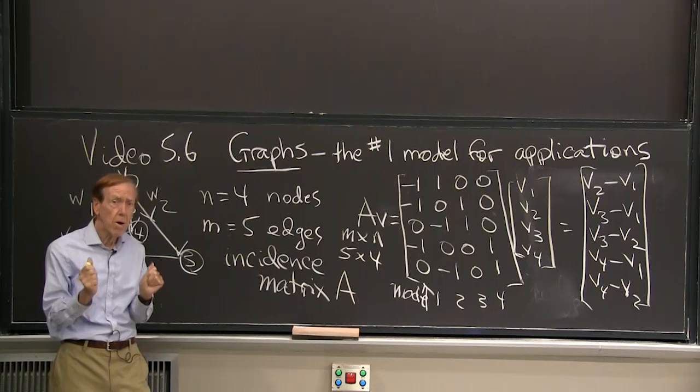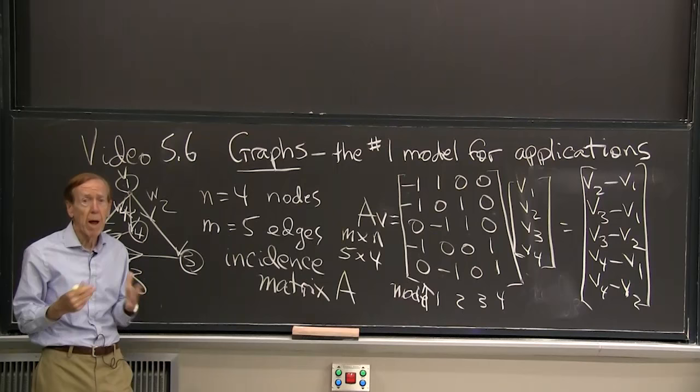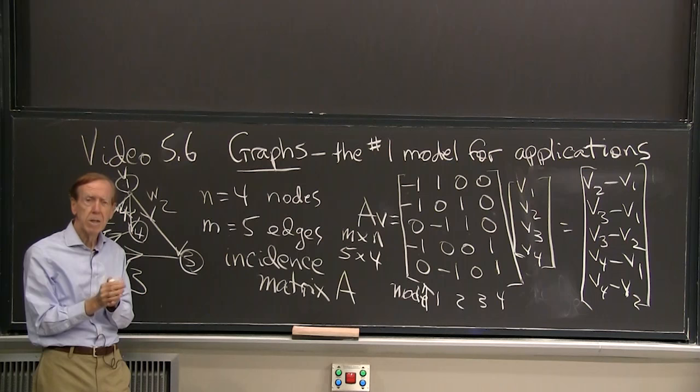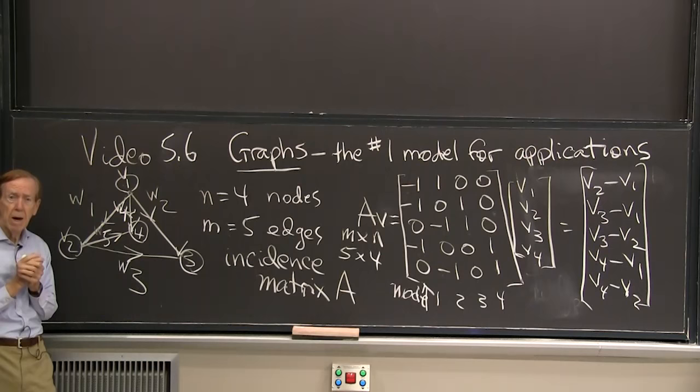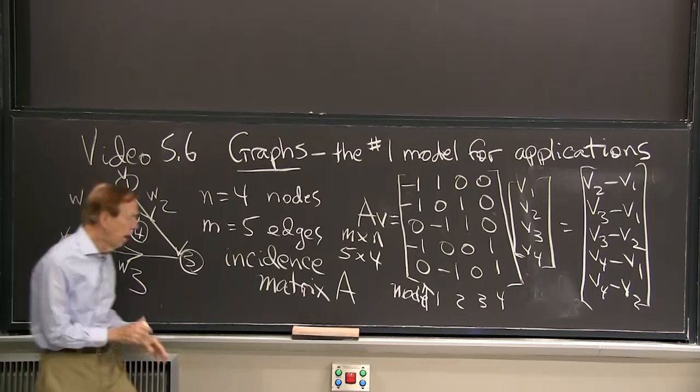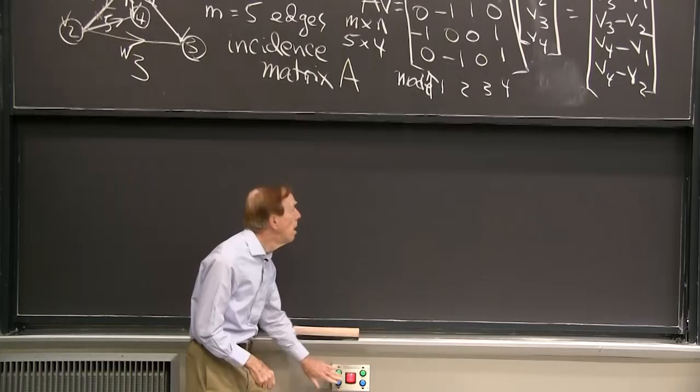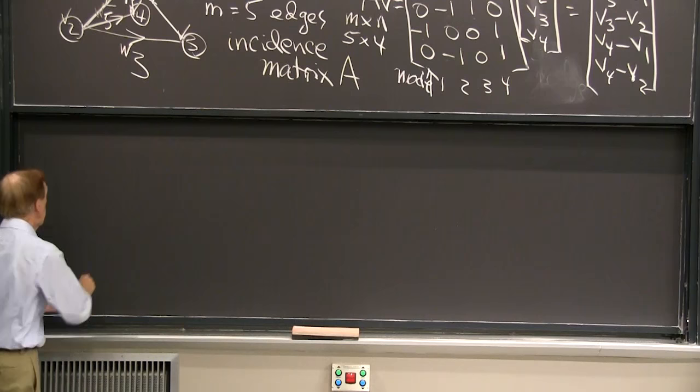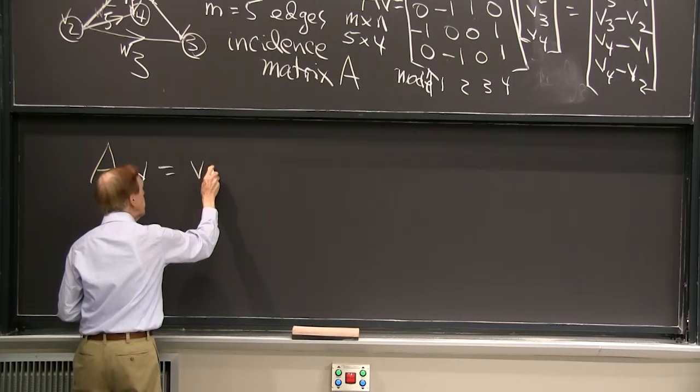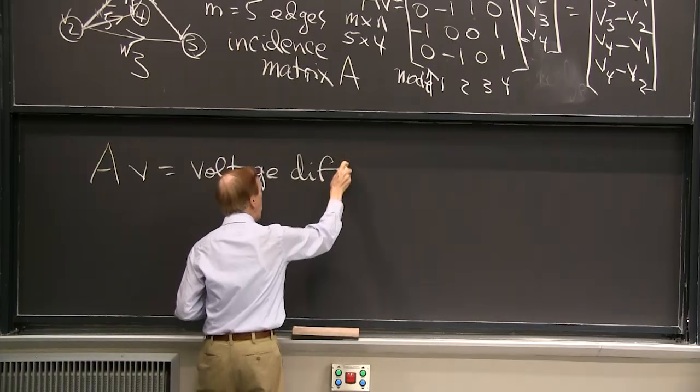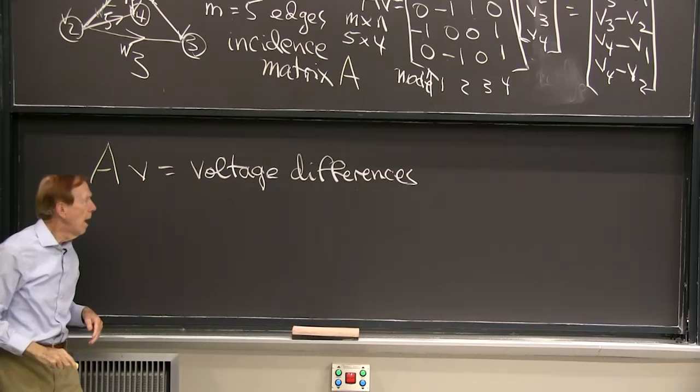We're talking about the most basic equation of, I would almost say, of applied mathematics. Maybe I should say of discrete applied mathematics. By discrete, I mean a graph without derivatives. I'm not seeing derivatives here. I'm just seeing matrices and vectors. OK, so let me, so I have to remember that incidence matrix, A. So let me write down again. A, V gave the voltage differences, and that's one part of my picture.